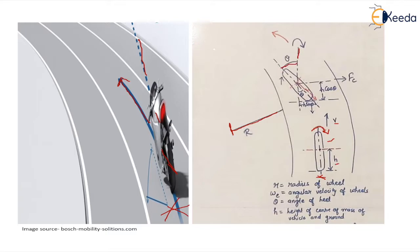Now, small h is the height of center of mass of the vehicle from the ground. This h is in the vertical direction. When the vehicle takes a turn, this h is also turning. While doing the calculations, we are interested in the vertical height which is h cos theta. These are the alternate angles; if this angle is theta, this angle will also be theta. So this term is h cos theta.